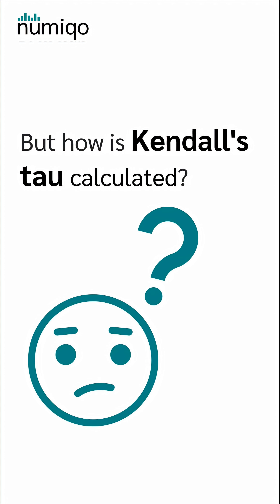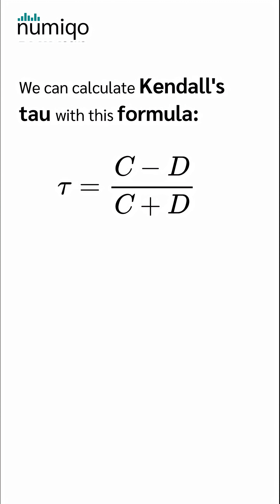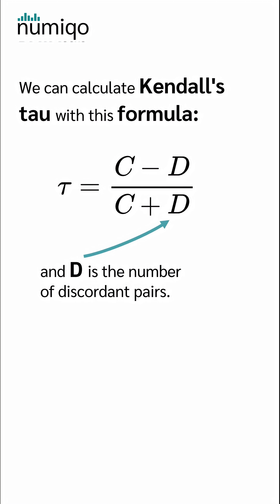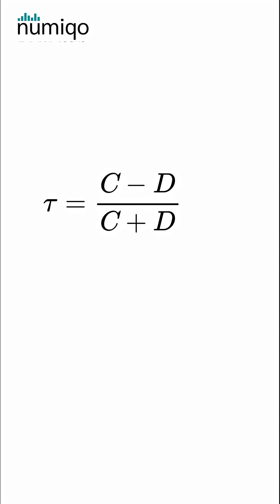But how is Kendall's Tau calculated? We can calculate Kendall's Tau with this formula, where c is the number of concordant pairs and d is the number of discordant pairs.